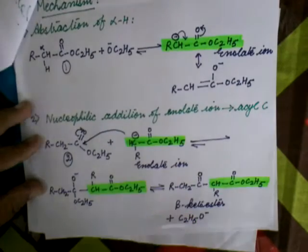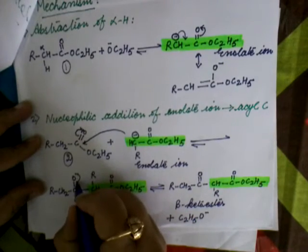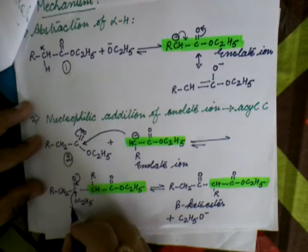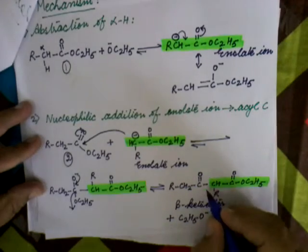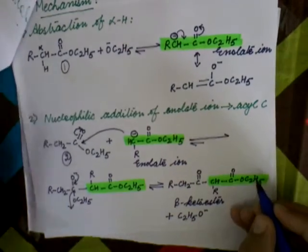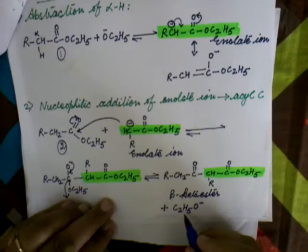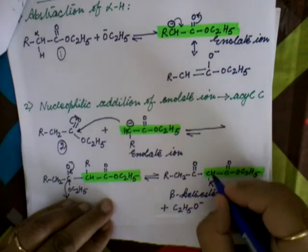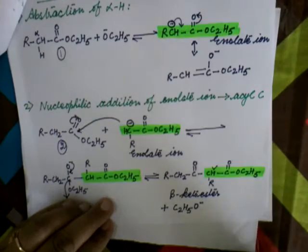Further, ethoxide ion will be removed, it is regenerated here, and there is formation of beta-keto ester. In the third step, this ethoxide ion will abstract this hydrogen atom.